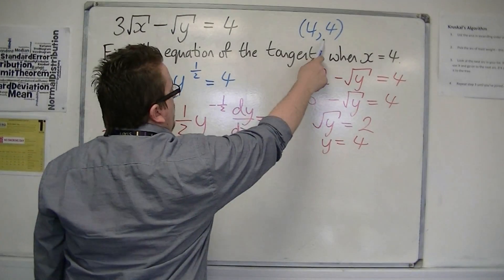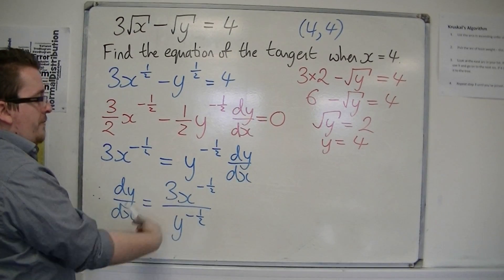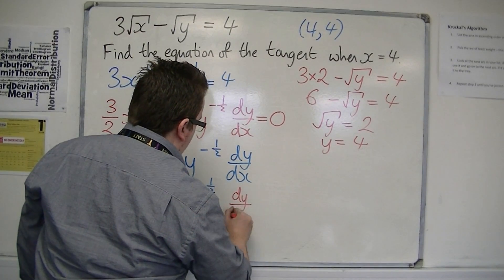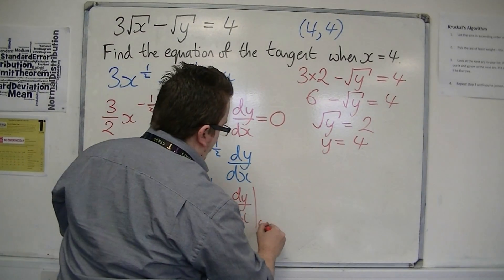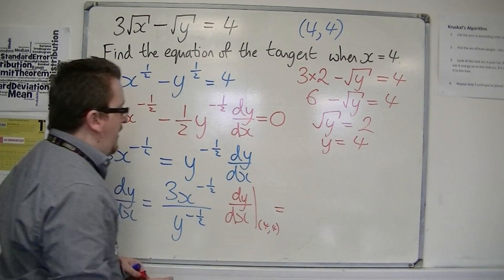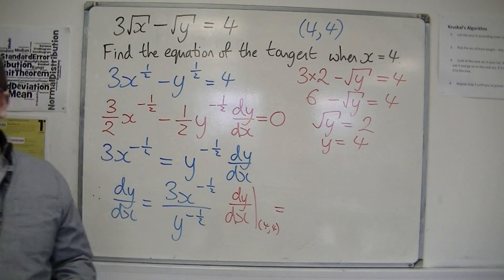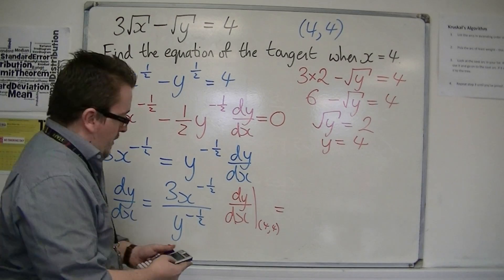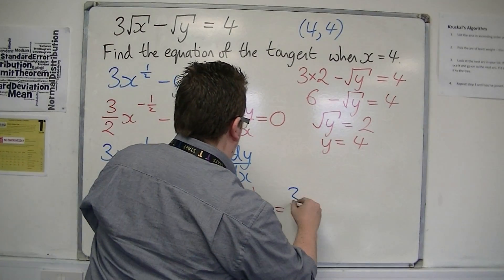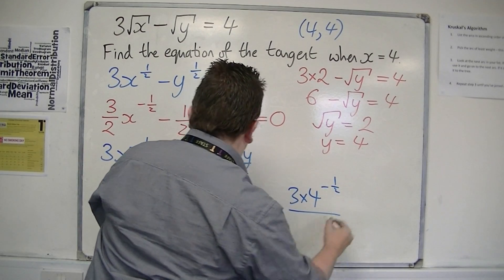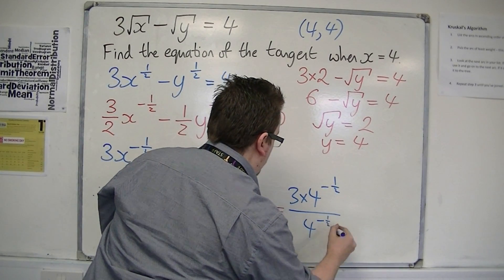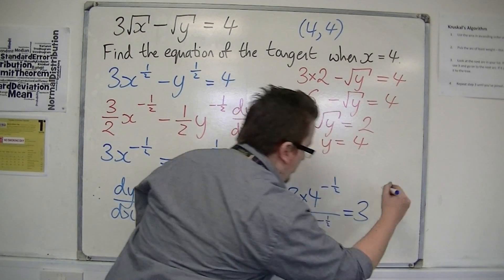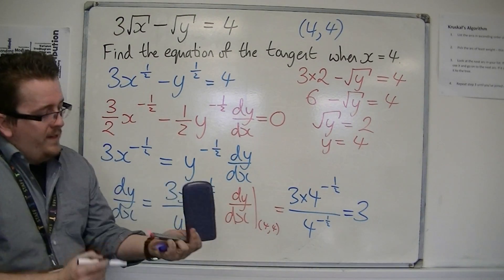So if I substitute that coordinate into my gradient function, it will tell me the gradient of the tangent line. So dy by dx evaluated at 4, 4 is equal to... Let's do this on a calculator, which is all the way over there. So we've got 3 times 4 to the minus 1 half over 4 to the minus 1 half. Now 4 to the minus 1 half is cancel out. Turns out I didn't really need my calculator. So that's just 3.